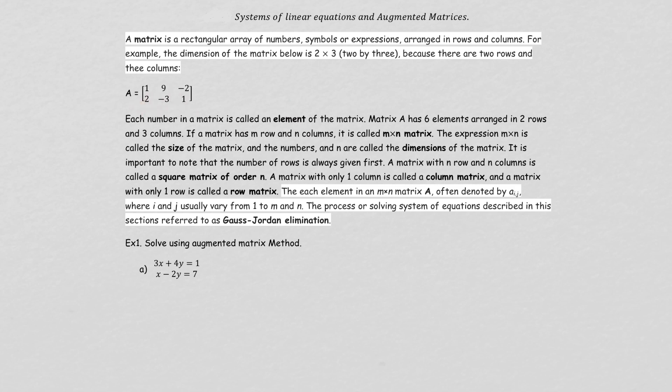If you have only 1 column in a matrix, you call that a column matrix. And if you have 1 row, that's going to be a row matrix.